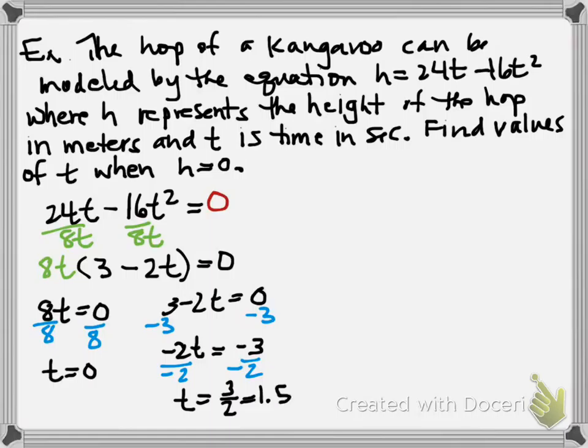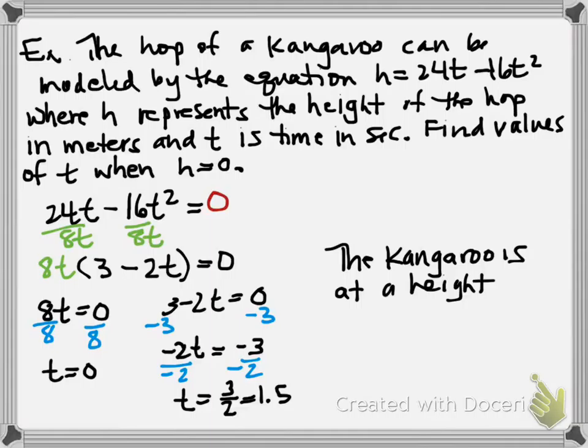So again, we would not leave time as an improper fraction because that doesn't really make sense. So I could write it as a mixed number. I could write it as a decimal. So we would say the kangaroo is at a height of zero at zero seconds and 1.5 seconds. I could say zero meters. I guess I could write that in there. So that's what you get to work on tonight.